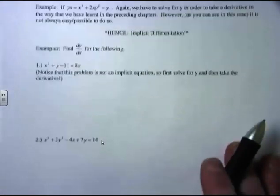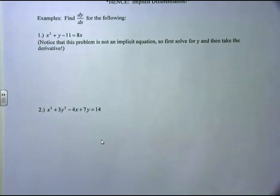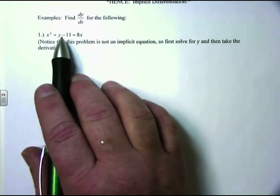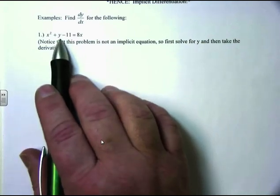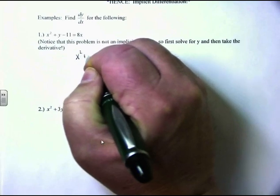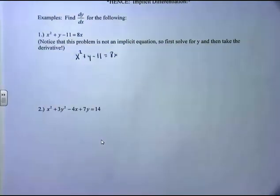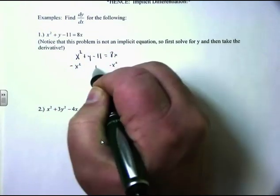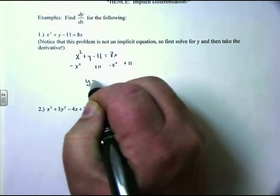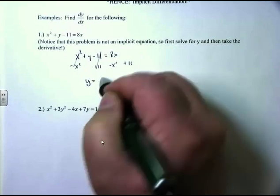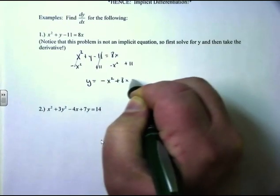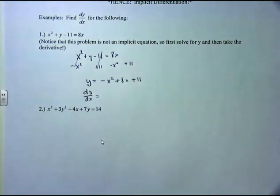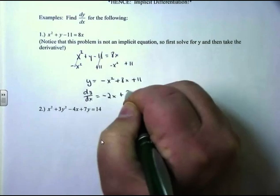Let's look at some examples. Find dy/dx for the following. Here in this first one, I have x squared plus y minus 11 equals 8x. In this particular example, it is very simple to solve for y to take the derivative, and that's exactly what you should do. So I subtract x squared from both sides and add 11 to both sides, giving me y equals negative x squared plus 8x plus 11. Now it's simple to take the derivative: derivative of negative x squared is negative 2x, plus derivative of 8x is 8. And there's my solution.